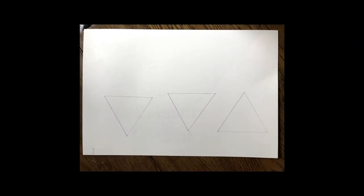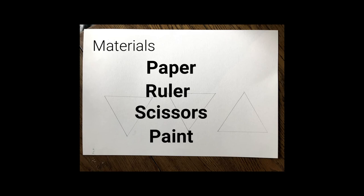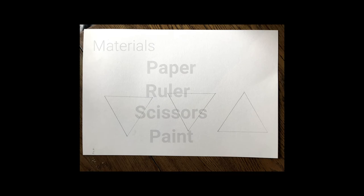Hello everybody, it's Kerry, Museum Educator from the Hyde Collection. This week's project we are making a geometric form out of paper. You'll need paper, scissors, a ruler, and some paint if you have it. Otherwise you can add color with any type of materials you have.